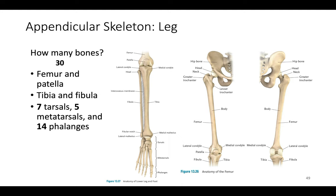Moving down the leg: the femur connects to the patella (kneecap), then the tibia and fibula. The tibia is the weight-bearing bone; the fibula connects on the side but does not articulate with the femur — only the tibia does. Then we have seven tarsals, five metatarsals (the long bones of the foot), and 14 phalanges — three each for four toes and two for the big toe.